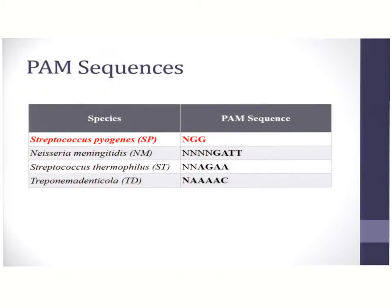Here are some examples of PAM sequences. The Streptococcus pyogenes PAM sequence is NGG, in which N can represent the nucleotides A, T, C, or G. A range of organisms and their respective PAM sites are indicated in this table.